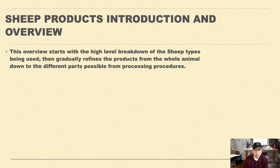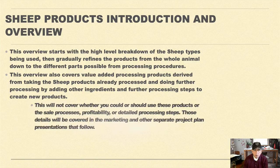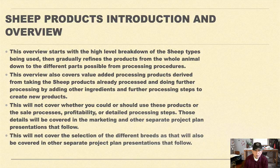This overview starts with the high-level breakdown of the sheep types being used and gradually finds the products from the whole animal down to different parts possible from processing procedures. It also covers value-added processing products derived from taking the sheep products already processed and doing further processing by adding other ingredients and further processing steps to create new products. This will not cover whether you should or could use these products, or the sale processes, profitability, or detailed processing steps — those details will be covered in the marketing and other separate project plan presentations that follow. This will also not cover the selection of different breeds or sizes, as that will be covered in other separate project plan presentations.